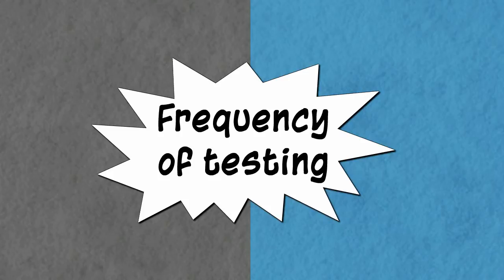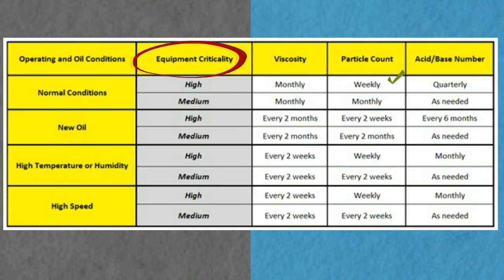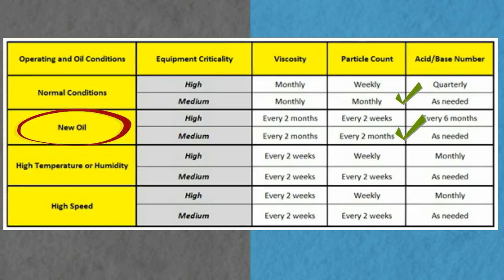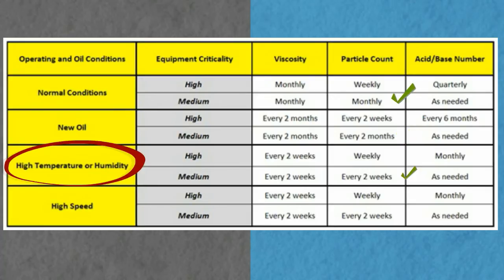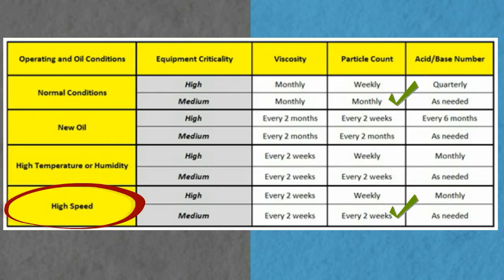Next, define the frequency of testing by considering: one, the criticality of the equipment — more critical equipment needs to be tested more frequently; two, the age of the lubricant — older lubricants need more frequent testing; three, the operational environment, such as heat, humidity, and debris contamination — the tougher the environment, the more often tests are needed; and four, the working conditions of the machine, such as load or speed — the harder the conditions, the more frequent the testing.